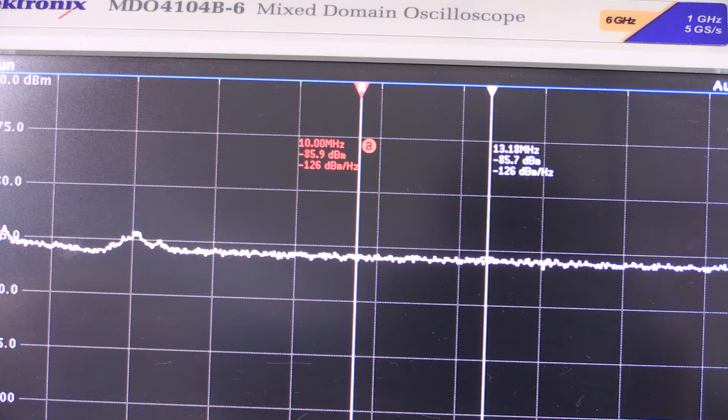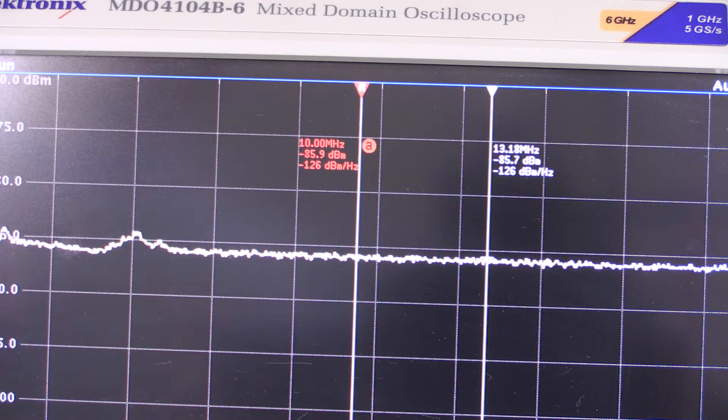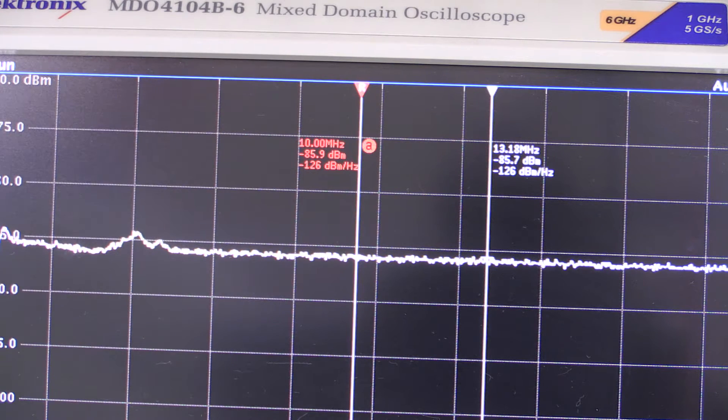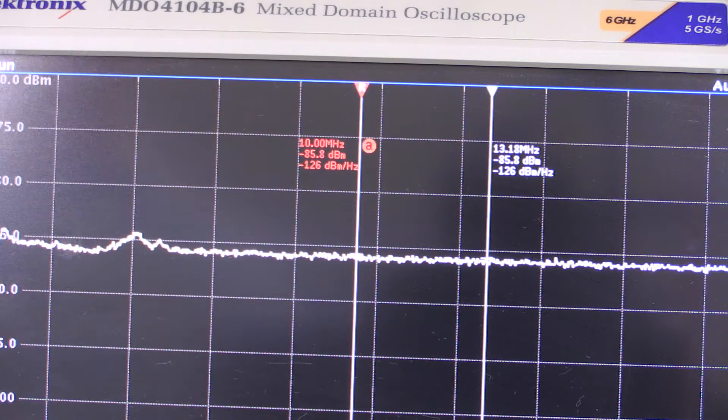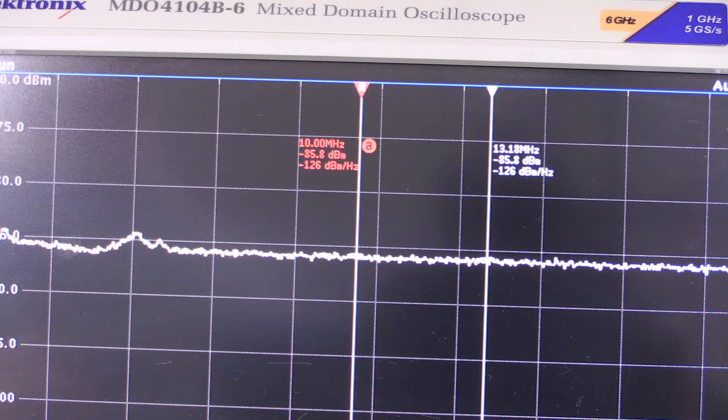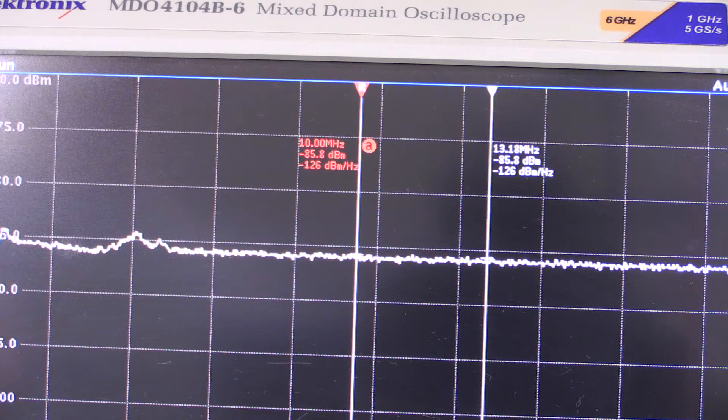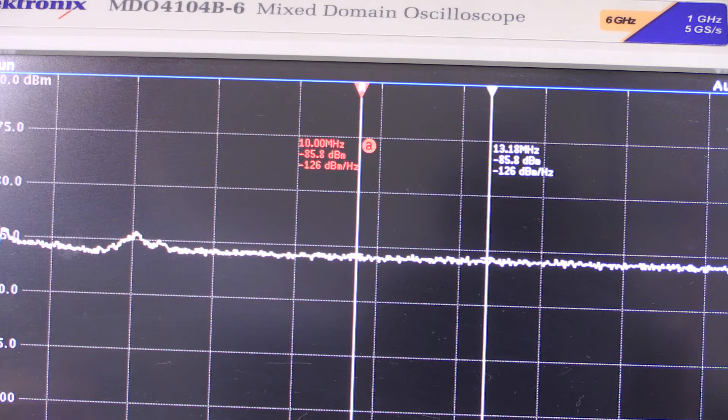The downside of using the Y-factor method is you need a calibrated noise source. You need to know your excess noise ratio coming out of the noise source, else you can't do any math. That's basically the difference. If you don't have a noise source, you may have to resort to the gain method as a good guesstimate, but if you do have a noise source, you probably want to prefer the Y-factor method over the gain method any time.